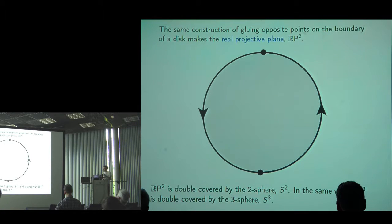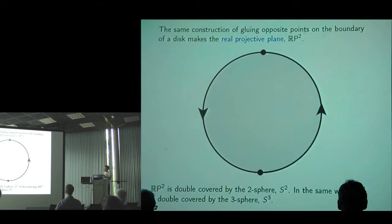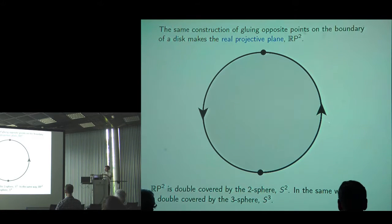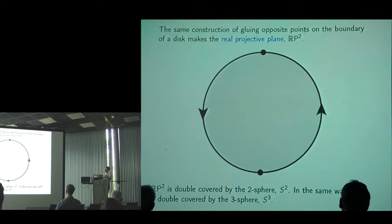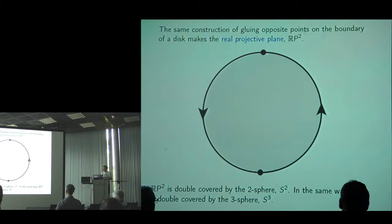RP2 is double covered by the 2-sphere, the ordinary sphere of two-dimensional space. Similarly, RP3 is double covered by the 3-sphere — the sphere of four-dimensional space. One way to think about this double cover: take two copies of the picture, and instead of gluing corresponding arrows within the same sheet, glue them to the corresponding arrow on the other sheet; the result is the 2-sphere.